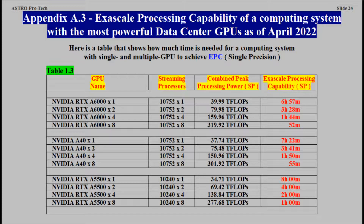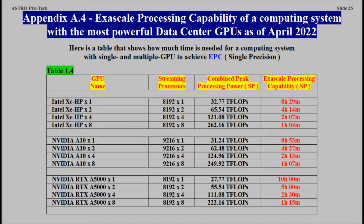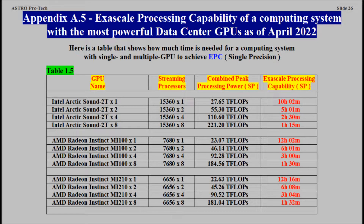Appendix A3: Exascale Processing Capability of a Computing System with the most powerful data center GPUs as of April 2022. Appendix A4: Exascale Processing Capability of a Computing System with the most powerful data center GPUs as of April 2022. Appendix A5: Exascale Processing Capability of a Computing System with the most powerful data center GPUs as of April 2022.